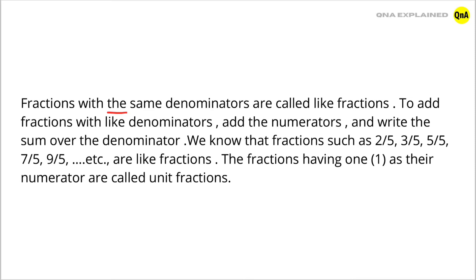Fractions with the same denominators are called like fractions. To add fractions with like denominators, add the numerators and write the sum over the denominator. We know that fractions such as 2 upon 5, 3 upon 5, 5 upon 5, 7 upon 5, 9 upon 5, etc. are like fractions.